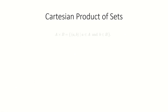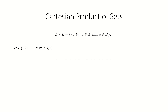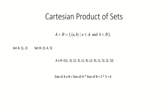To review, a Cartesian product of two sets A and B is the set of all ordered pairs (a, b) where a is in set A and b is in set B. For example, the Cartesian product of the set {1, 2} and {3, 4, 5} is {(1,3), (2,3), (1,4), (2,4), (1,5), (2,5)}, where each element is an ordered pair from those sets. This also shows that the Cartesian product has a size equal to the product of the sizes of sets A and B — set A had two elements, set B had three, so the Cartesian product has six elements.